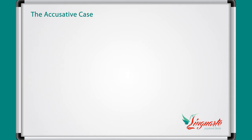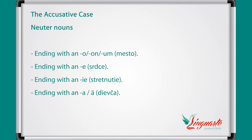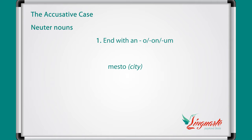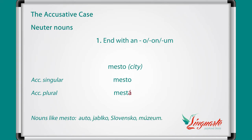The third gender of nouns is the neutral one. The neutral nouns are divided into nouns ending in o, on, um like mesto; nouns ending in e like srdce; nouns ending in ie like stretnutie; nouns ending in a or ä like dievča. The nouns ending with o like mesto have these accusatives: mesto for singular and mestá for plural. Other words like mesto are auto, jablko, Slovensko, múzeum.